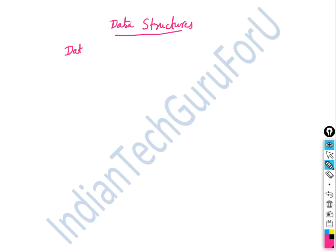First of all, what is data? Data means a value or a set of values. For example, a number 23 is data. A set of values means 23, 46, 79, 3 — that set of values is also data.